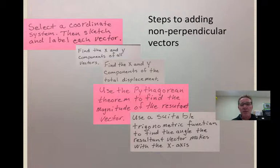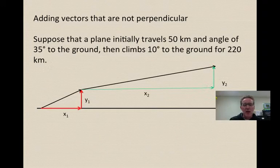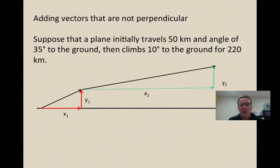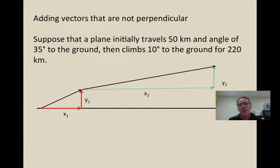And so here's the steps to adding non-perpendicular vectors. First, we're going to have to select a coordinate system. And at the same time, it would be a great idea to sketch and label each vector. And you should always do this, even if they were perpendicular to each other. I think it's very helpful to do that. And then we want to find the x and y components of all the vectors. Using the example from before, this is what we would do. We would basically create a triangle for each of those non-perpendicular vectors.